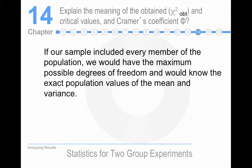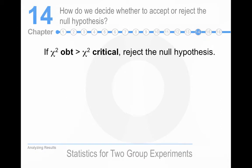If our sample includes every member of the population, we have the maximum possible numbers of degrees of freedom. So degrees of freedom is the number of scores free to vary in a distribution. Here's a critical slide. If our obtained chi-square is greater or equal to our critical value for chi-square, then we reject the null hypothesis.